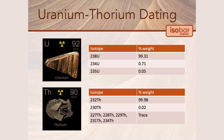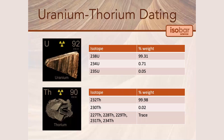On the other hand, thorium exists mainly in the form of thorium-232 — about 99.98% — compared to 0.02% of thorium-230, and trace amounts of the other five isotopes. Out of these forms, it's uranium-238 and thorium-232 which are most important in radioactive dating.